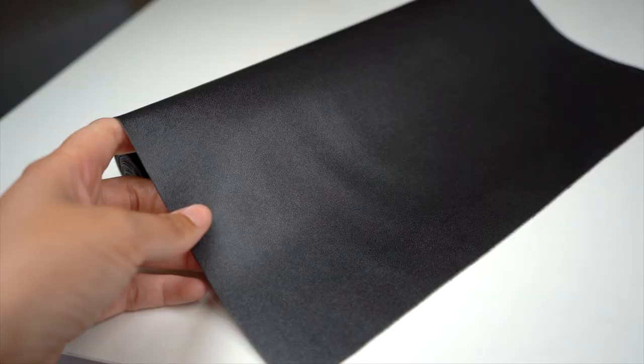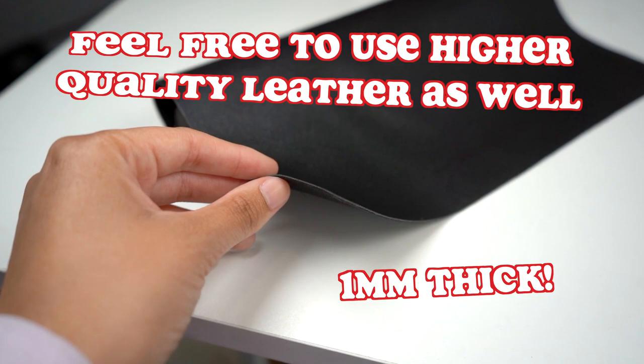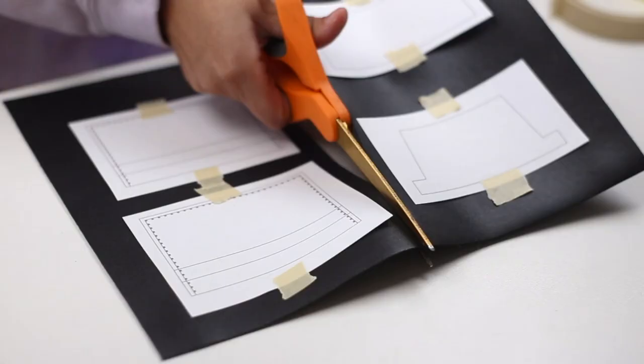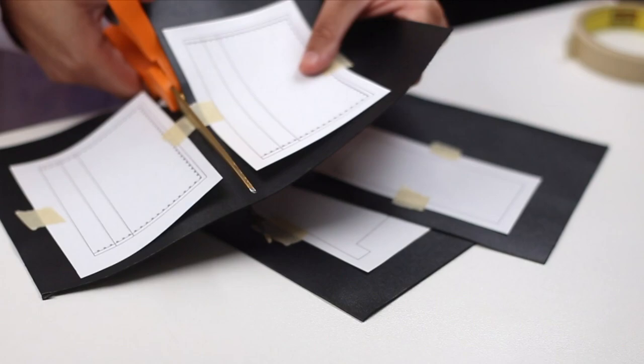Next we're gonna grab some black leather. It's important to note that this leather is one millimeter thick so that it's thin enough for a needle to pass through easily. We're gonna grab those same pieces we just cut out and use some tape to attach them to our leather. Once attached, you can cut away each section with scissors so it'll be easier to slice them out individually.